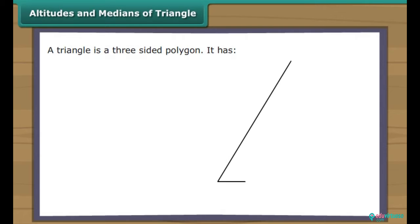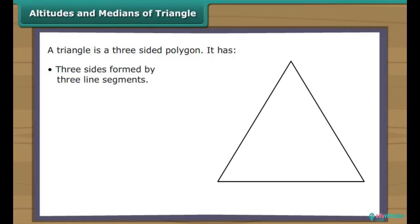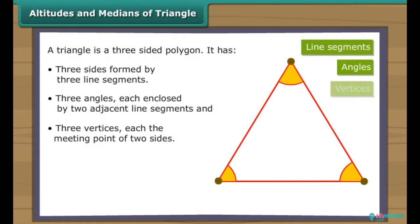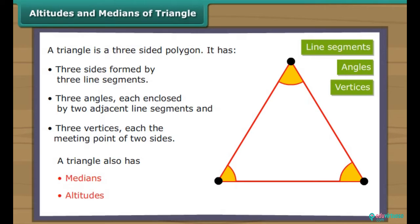Altitudes and Medians of a Triangle. A triangle is a three-sided polygon. It has three sides formed by three line segments, three angles each enclosed by two adjacent line segments, and three vertices each being the meeting point of two sides. A triangle also has medians and altitudes.